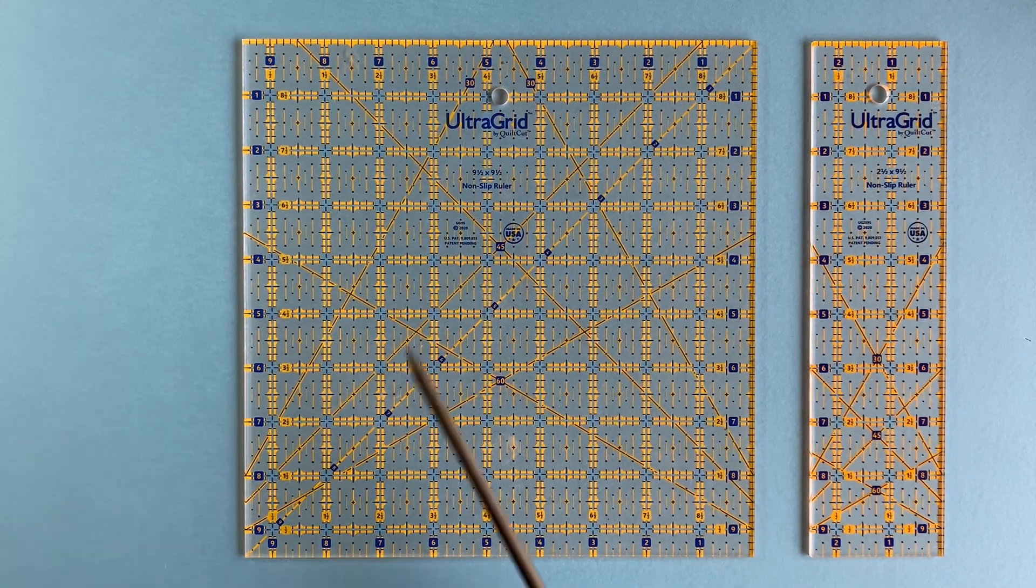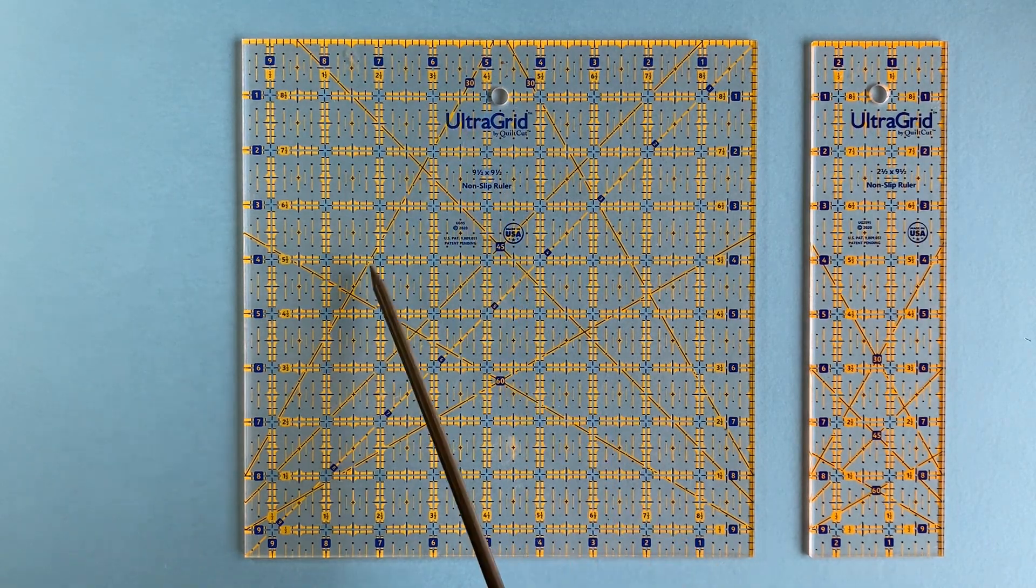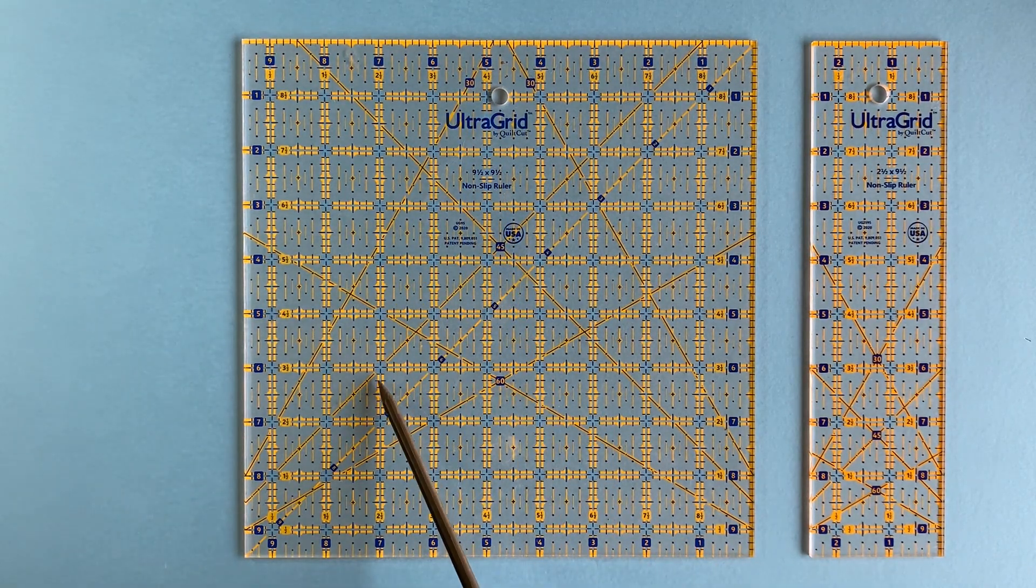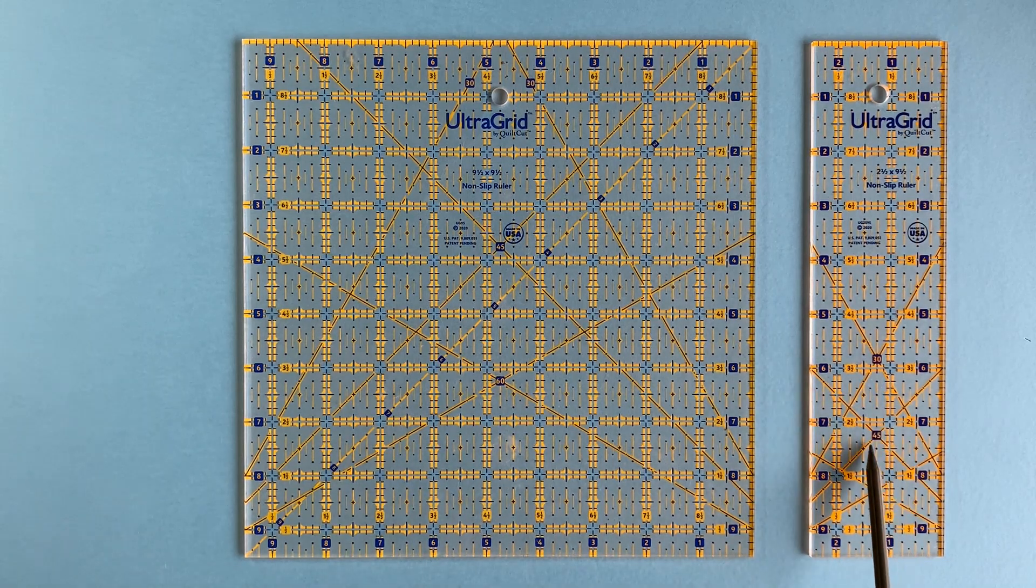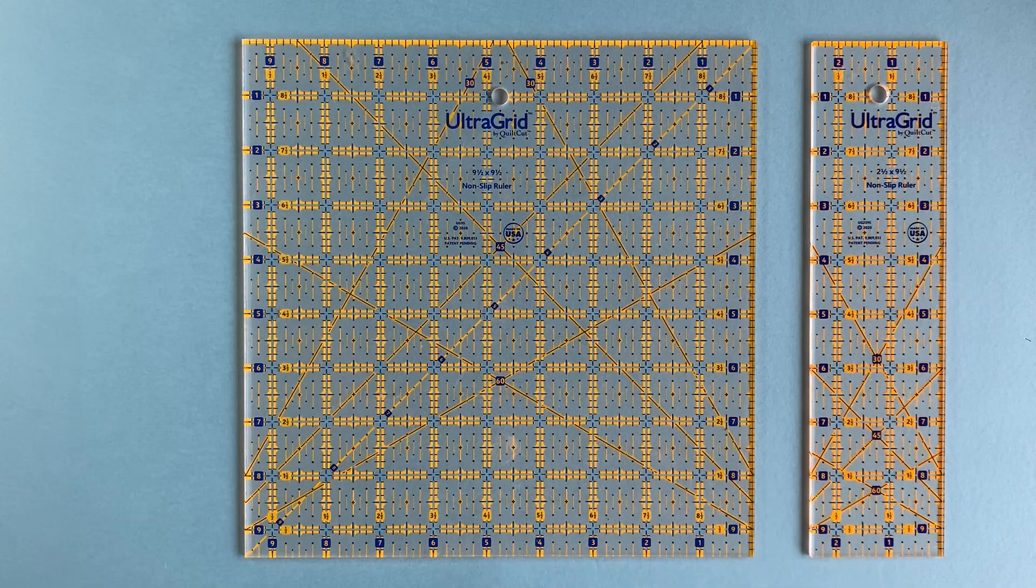UltraGrid rectangle and standard square rulers include 30 degree, 45 degree and 60 degree angle lines to cut other quilting shapes such as diamonds and triangles.